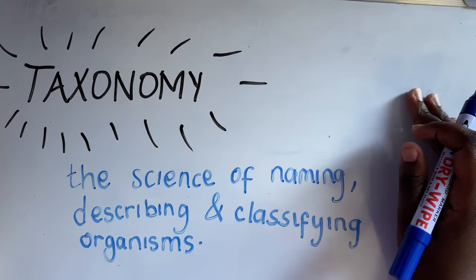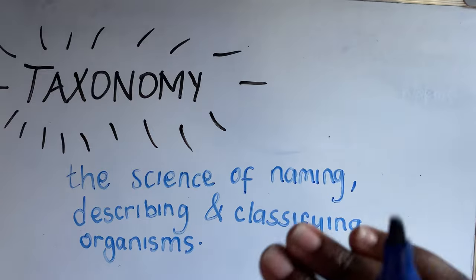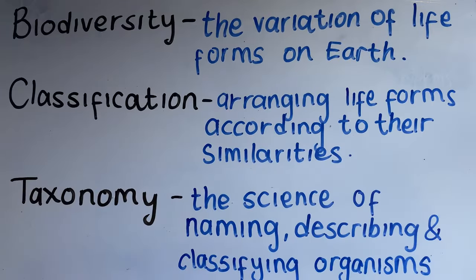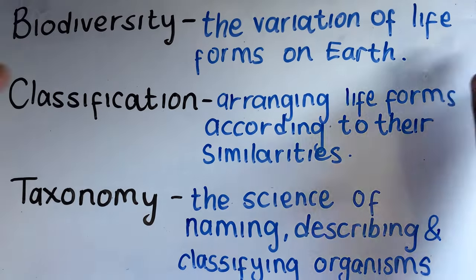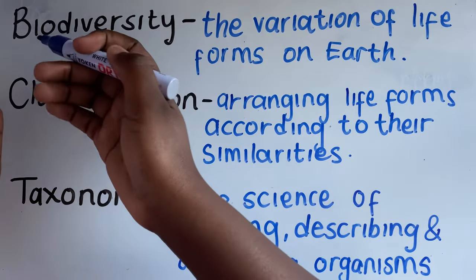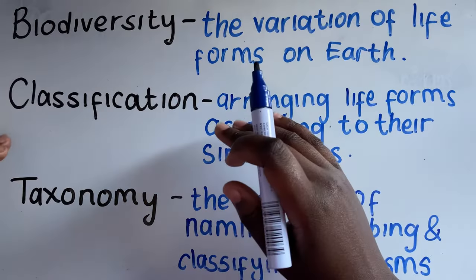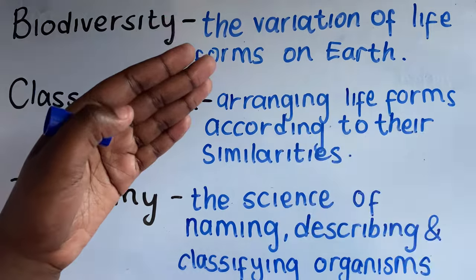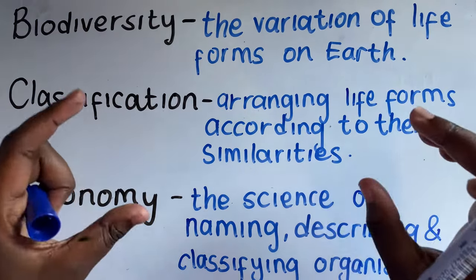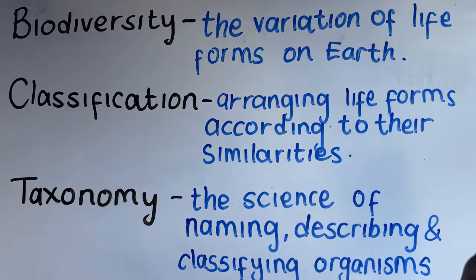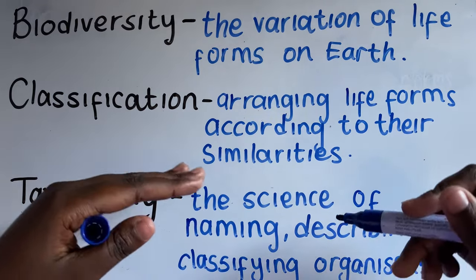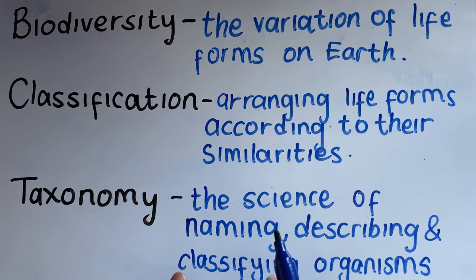Let us go through our biological terms once more, as biological terms are very important in life science. Biodiversity is the variation of life forms on earth — bio meaning life, diversity meaning variation. Classification is arranging these life forms according to their similarities, placing them in categories. And taxonomy is the science of naming, describing, and classifying these organisms.